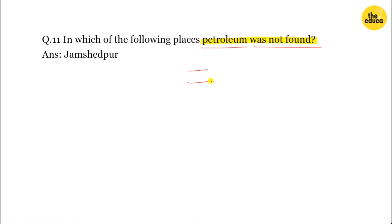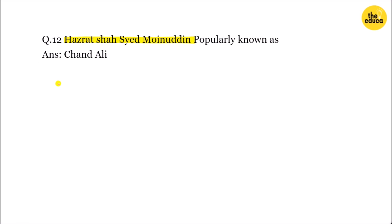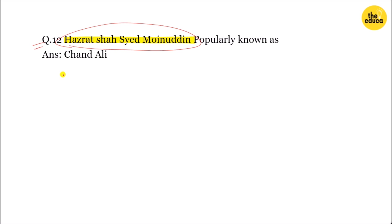Question number 12 is about the year 1768, and what a particular place or event is popularly known as. The appropriate answer is to be selected from the given options.